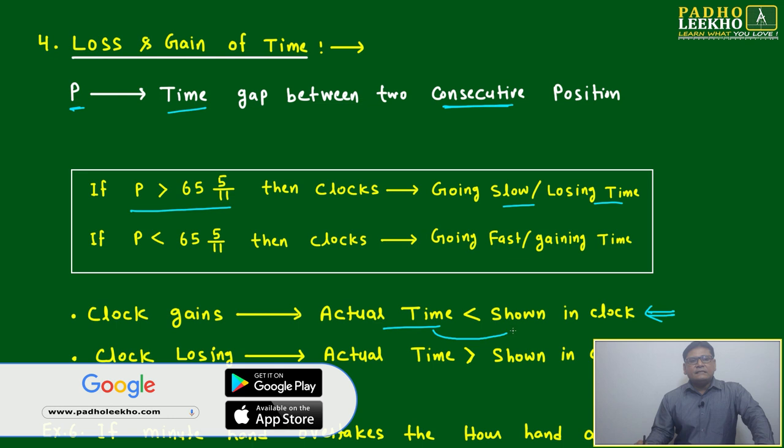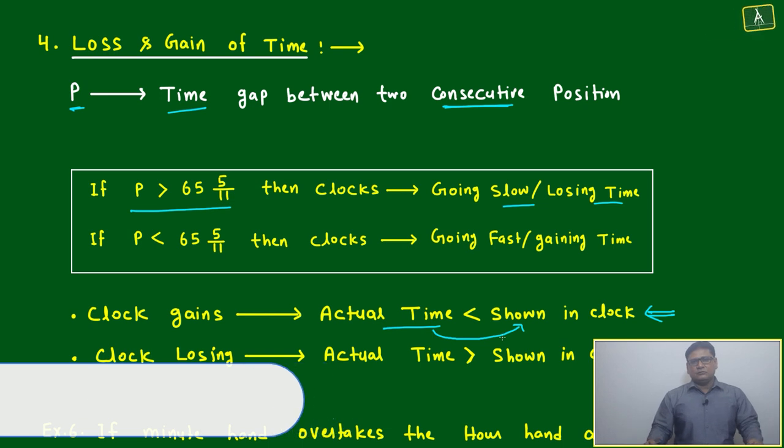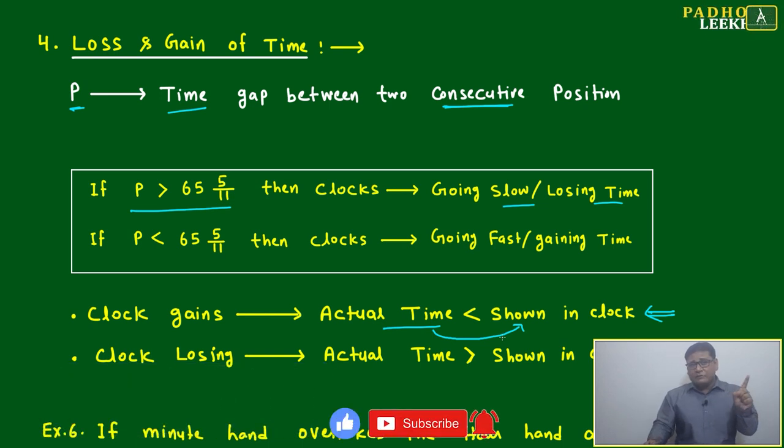It will be less than shown in the clock. The clock is showing 5 hours 18 minutes. If it is gaining time, the actual time will be maybe 5 hours 14 minutes or 5 hours 15 minutes. Actual time will be always less than shown.